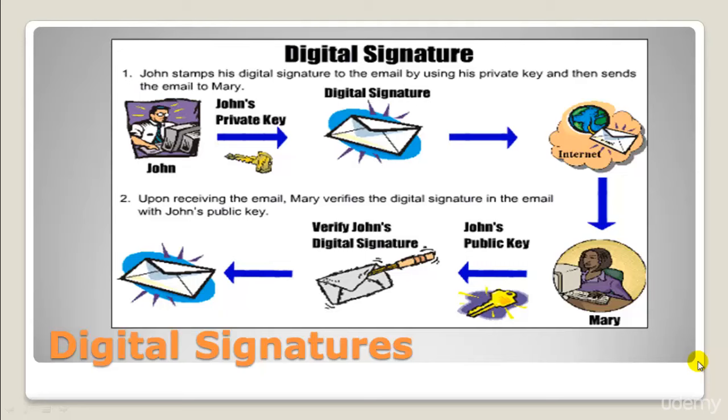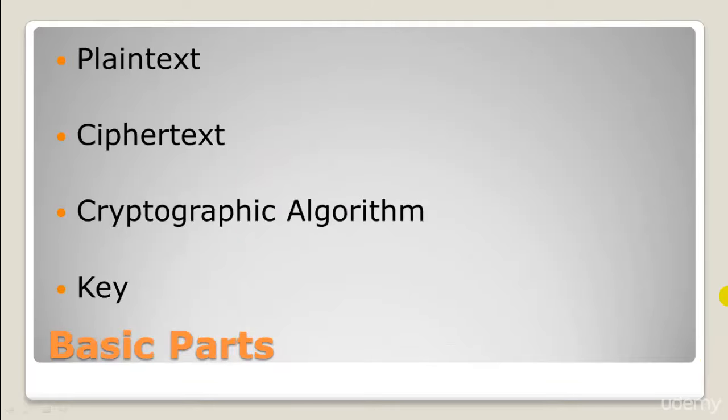There are four basic parts in cryptography. The first one is plaintext — it is unscrambled information to be transmitted. It could be a simple text document, a credit card number, a password, a bank account number, or sensitive information such as payroll data, personal information, or a secret formula being transmitted between organizations.